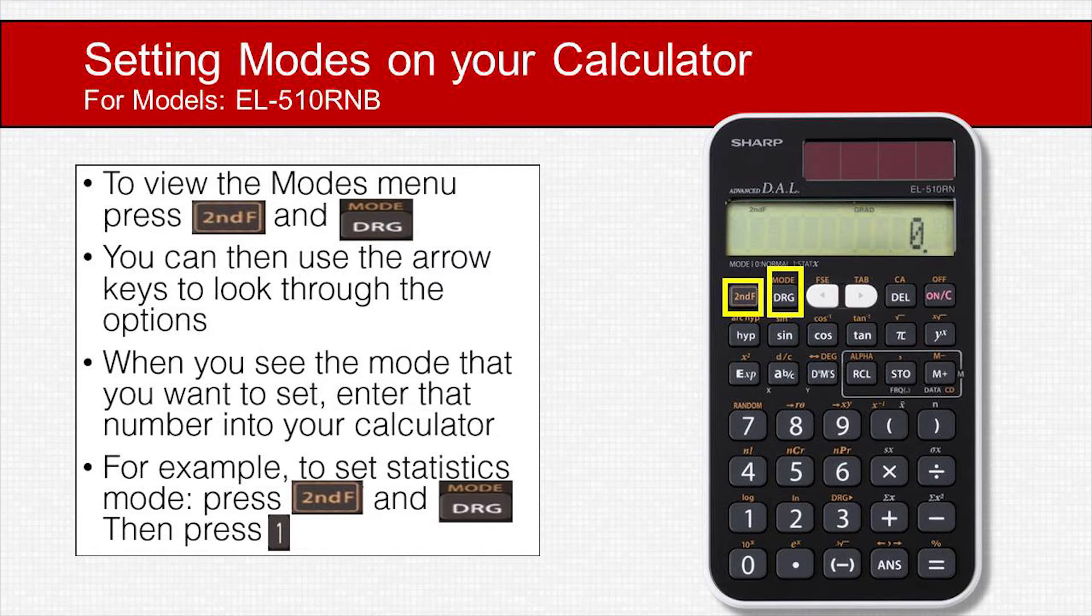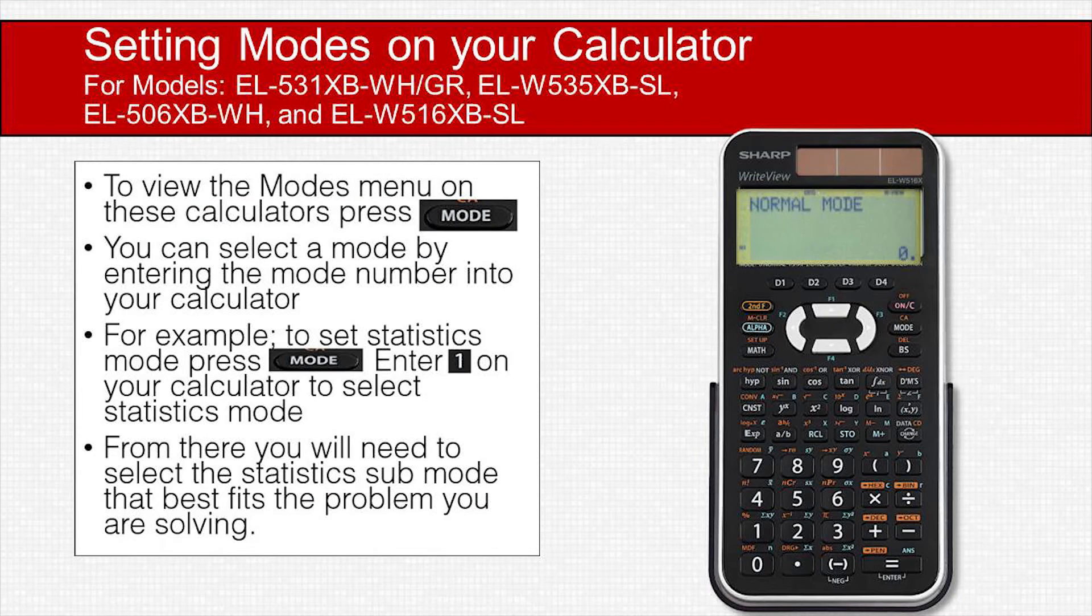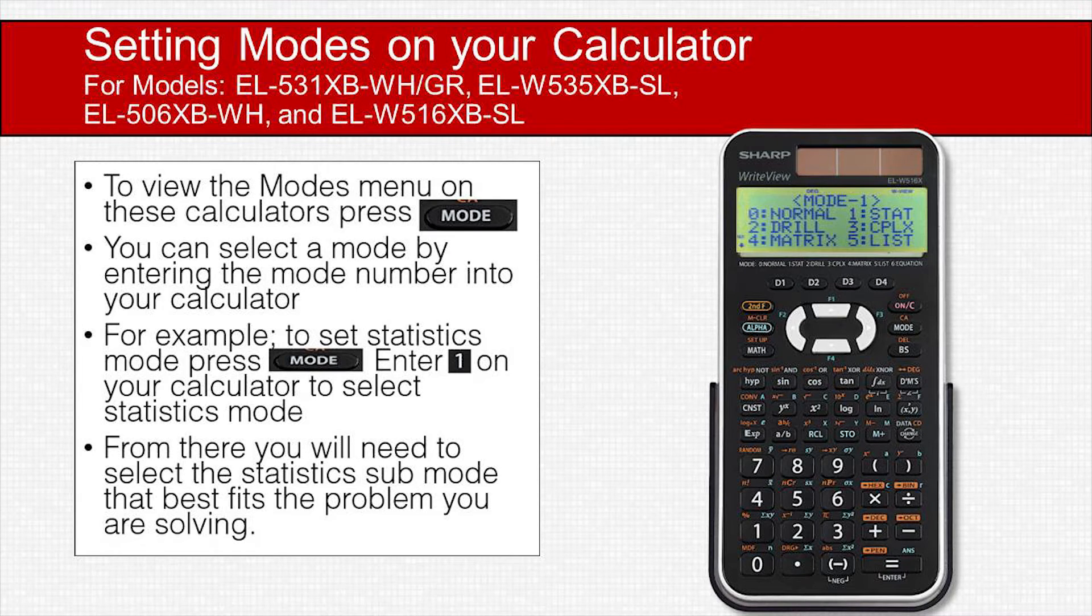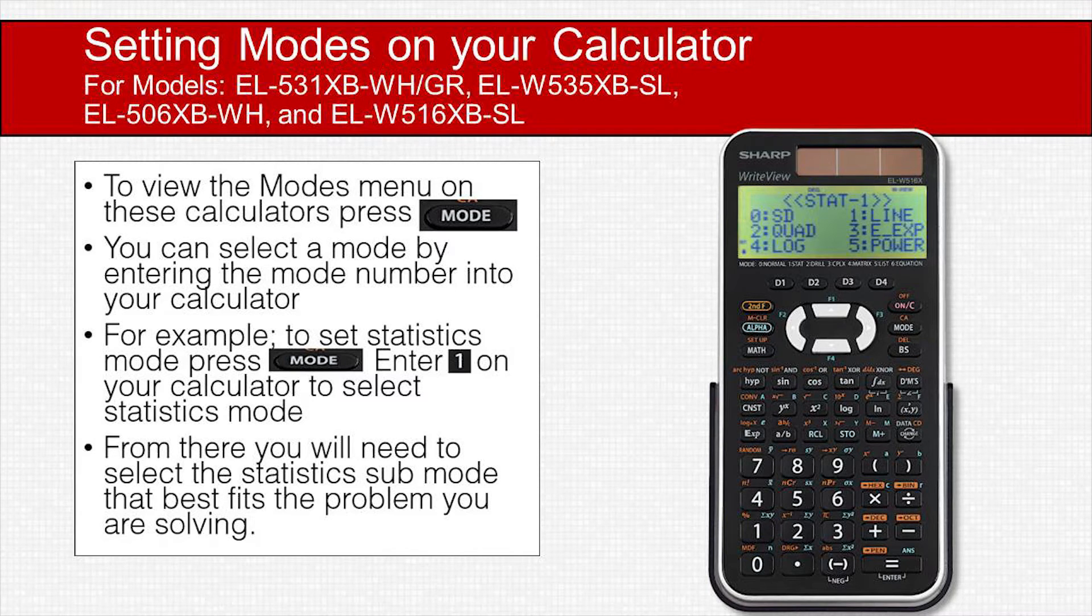On the EL-531XB-WH/GR, ELW535XB-SL, EL-506XB-WH, and ELW516XB-SL, press the MODE button. If your calculator has a long list of available modes, you can use the arrow keys to view the full menu. When you see the mode that you want, enter the number for that mode. For example, to set statistics mode, press MODE. You can see that the mode number for statistics is 1. Enter 1, and you will then see a selection of sub-modes. Choose the sub-mode that best fits your problem.